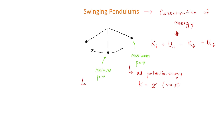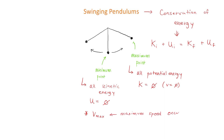Now let's look at the minimum point. Here, the pendulum only has kinetic energy. So all of the potential energy it had at the maximum point is converted to kinetic energy — that means it has no potential energy. And most importantly, the pendulum's maximum speed occurs at the minimum point.